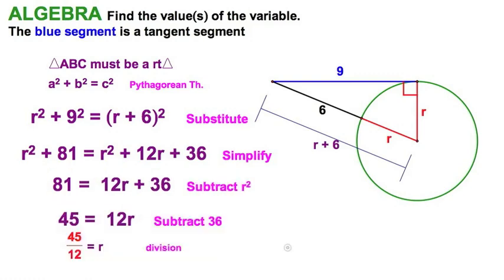Let's subtract the 36, and then we can divide by the 12, and we can see we have 45 twelfths, we can simplify that a little bit, 15 fourths, or 3 and 3 quarters, and we're done.